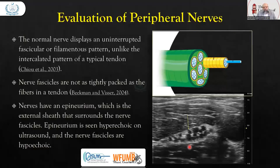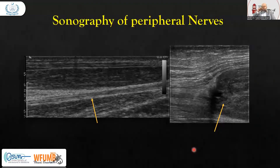If you look at a nerve, you will find hypoechoic areas which are the nerve fascicles, and white hyperechoic bands around them are the epineurium — the sheath around it. This is how the nerves appear. You can see the longitudinal view of a normal healthy nerve here.